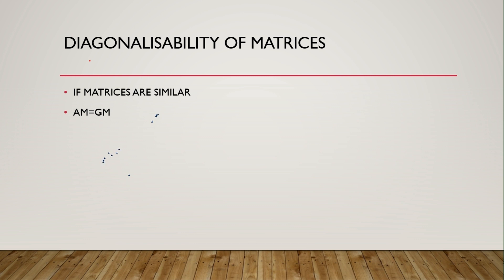To check whether a matrix is diagonalizable or not, you need to consider two conditions: one is whether the matrices are similar, and the other is whether algebraic multiplicity is equal to geometric multiplicity. For similarity, I have given you seven conditions in our previous video — you can go and check that out.